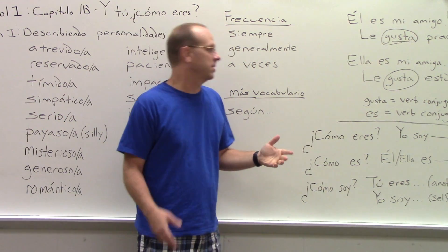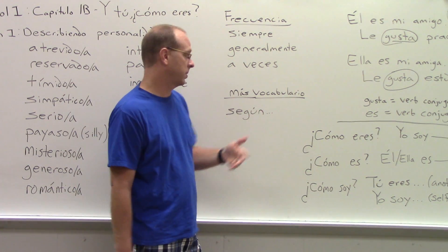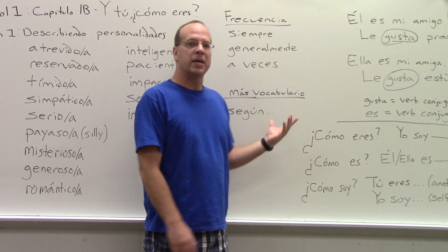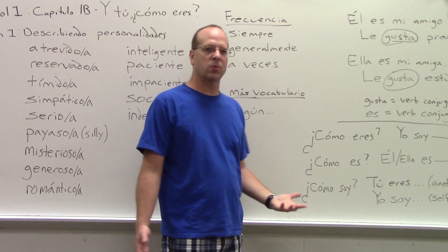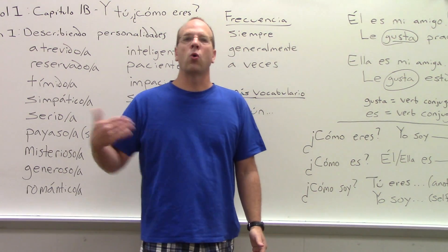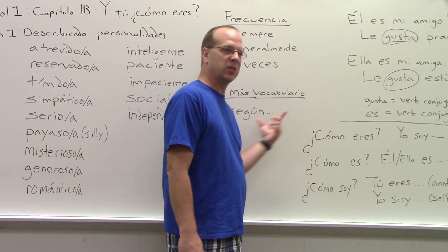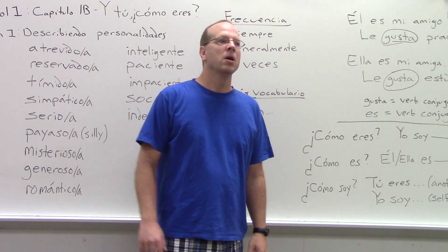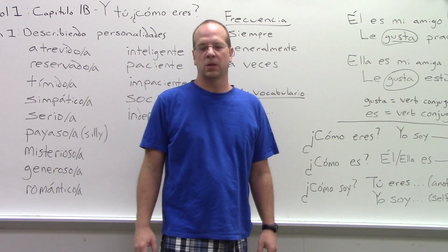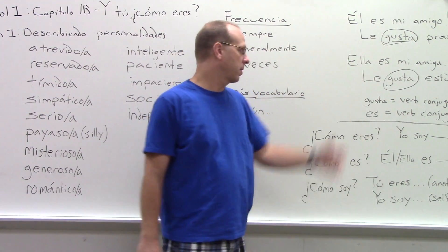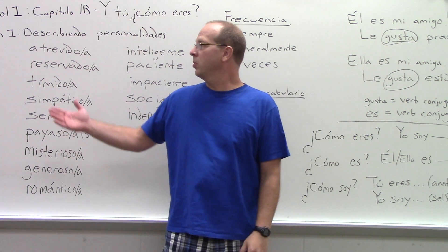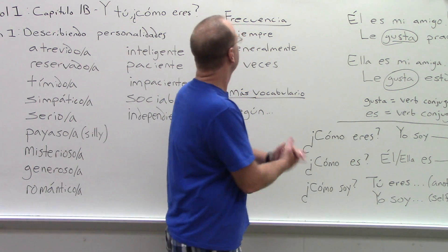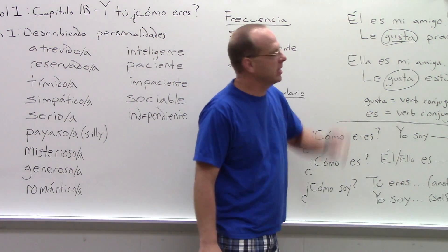I'm giving you a lot for the first lesson of the chapter. Then we have más vocabulario: según. I bring it up because students always forget this word, but it's actually pretty important. Según means according to — so whoever the person is after you say según, it's from that person's perspective. Según mi amigo. Según mi familia. Según mi hija soy muy cómico.